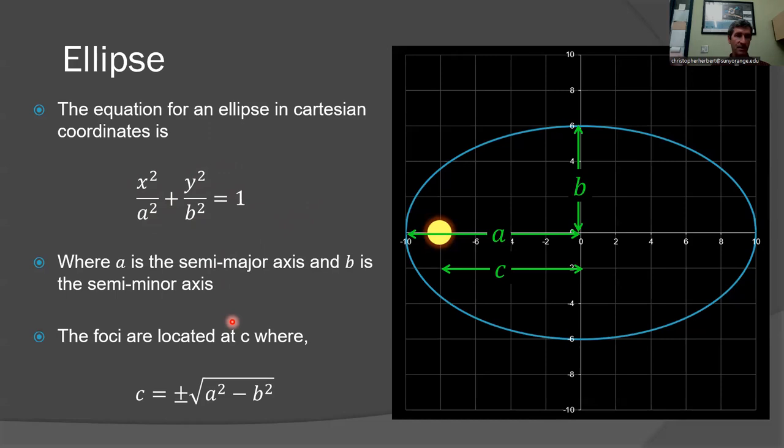A is the semi-major axis, B is the semi-minor axis. The foci are located at positive C and negative C. So for instance, I would have a focus right here, the other focus is right here. So positive C, negative C, where C is equal to plus or minus the square root of A squared minus B squared. If A were equal to B here, C would have to be zero because we would have C is equal to the square root of A squared minus A squared. That's zero.